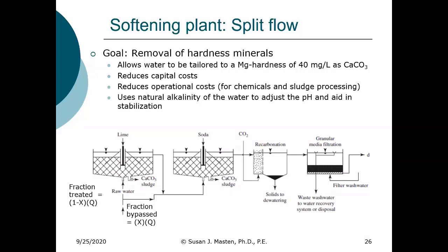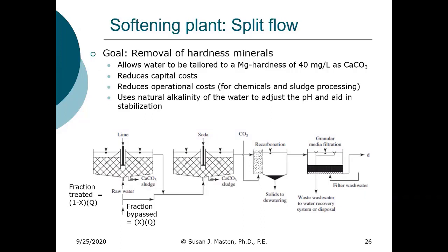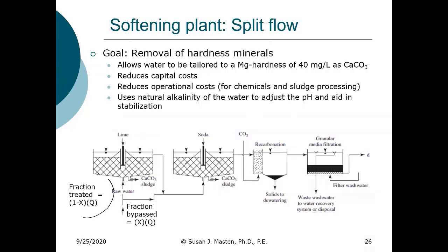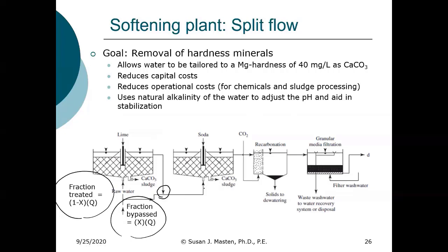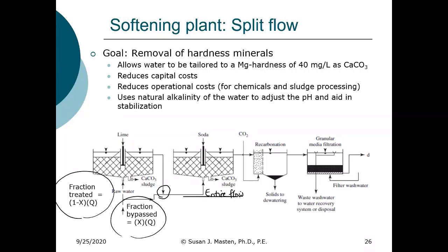We can also operate at a split flow, and here you're not treating the entire flow. This is the process that Lansing uses — if we were to go to the Lansing water plant, this is what we would see. What they do is add lime in the first stage, but they don't treat the entire flow. They treat some fraction of the flow, bypass some fraction of the flow, mix it, and then treat the entire flow through the second stage.